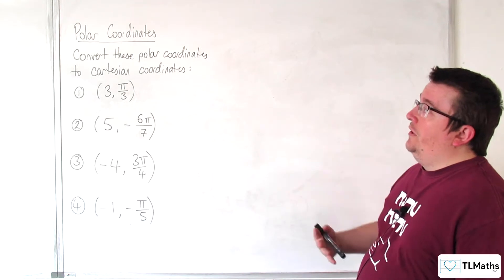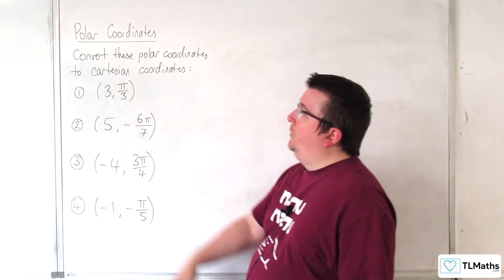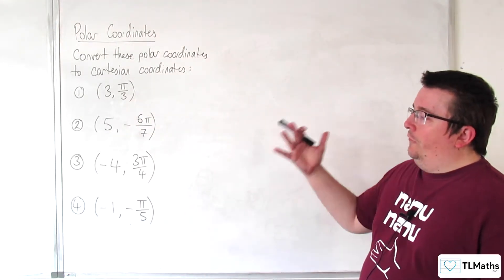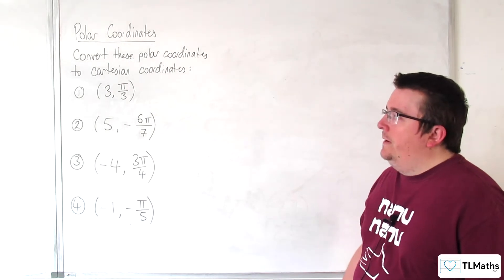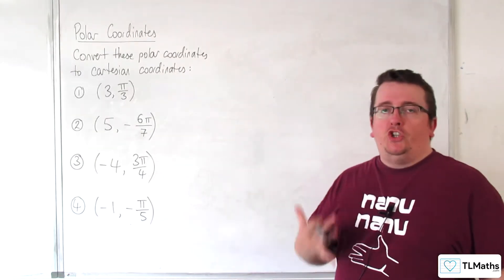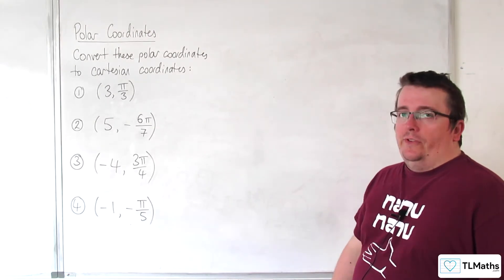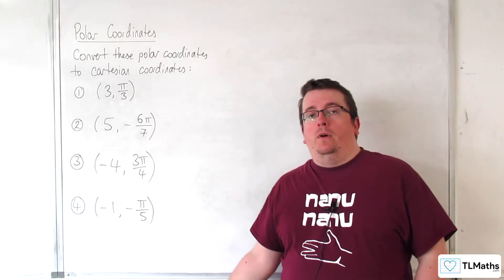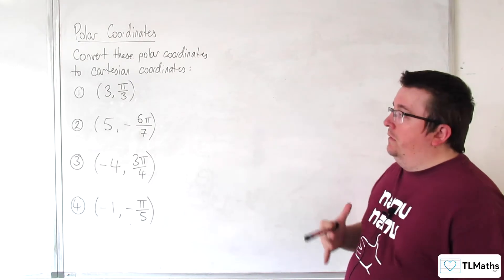So, in this video, we're going to be converting from polar coordinates to Cartesian coordinates. We've got four examples to run through here. Now, in each of these cases, I'm going to be drawing a diagram so we can visualize which quadrant the point is in, and that can help confirm our algebra.